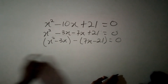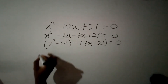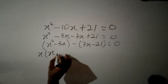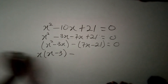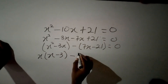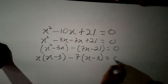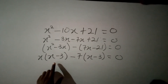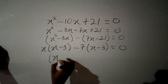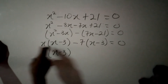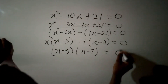We then factor out the common factors in each bracket. In the first bracket, the common factor is x, so we bring x out leaving behind x minus 3. We can observe there is a common factor of x minus 3 in both brackets, so x minus 3 comes out, and the remaining factor is x minus 7. This gives us x minus 3 times x minus 7 equal to 0.